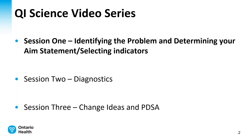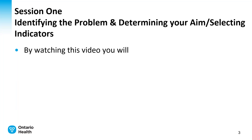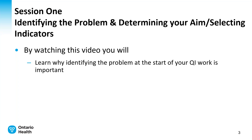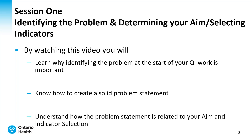Understanding your problem is like the prequel to your QIP. In order to understand what you want to focus on — the indicators — and what you want to achieve — your target — you need to first understand your problem. By watching this video, you will learn why identifying the problem at the start of your QI work is important, how to create a solid problem statement, and understand how the problem statement is related to your aim and indicator selection.